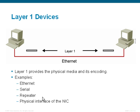Repeaters and hubs are considered layer one because there's no intelligence associated with them. They just regenerate the signal and then pass it along. They don't have any kind of processing information or can make any kind of intelligent decision based upon source and destination. Likewise, your network interface card operates within layer one, but it has some intelligence, and therefore the network interface card is also considered to operate partly within layer two.